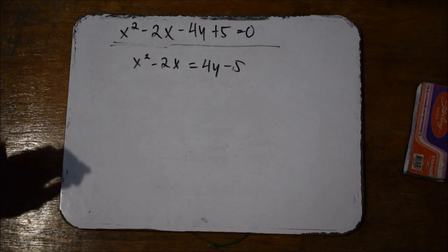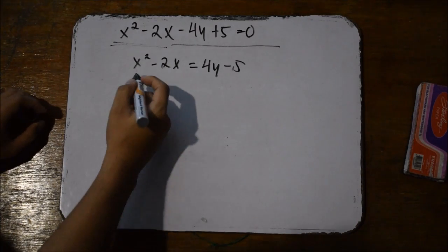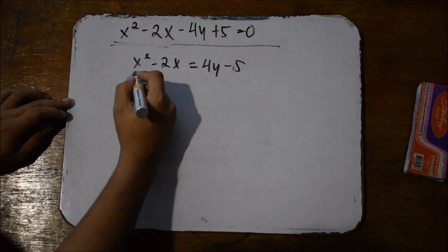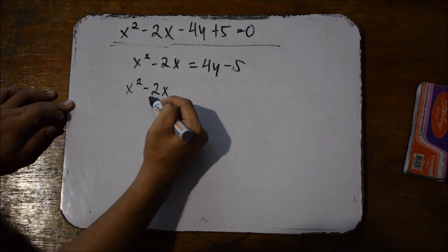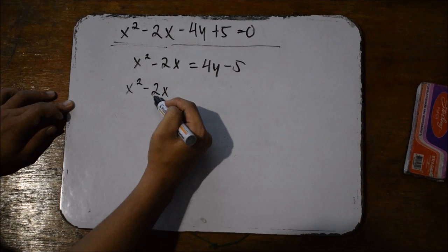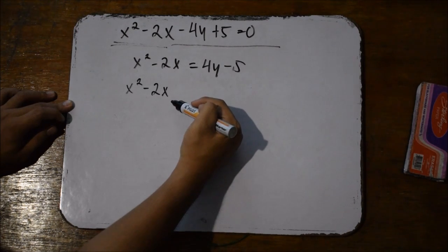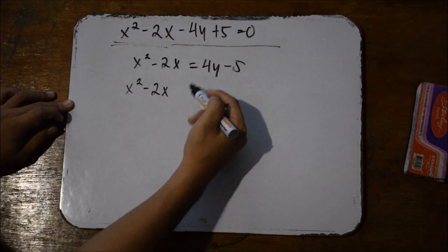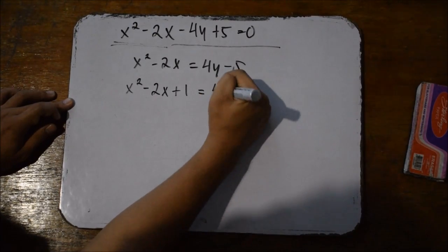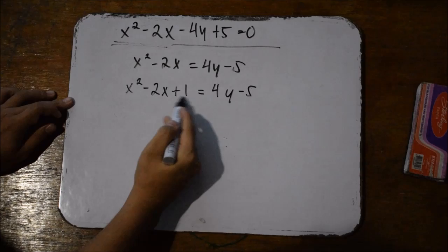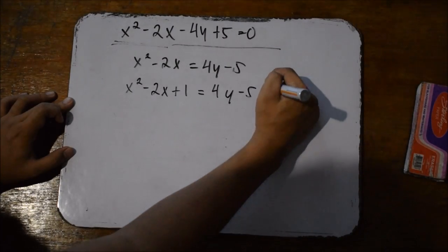After this, we're going to complete the square. Completing the square is done to simplify the expression. For example, with x squared minus 2x, we divide the second term by 2: negative 2 divided by 2 is negative 1. Then we square the quotient we got — negative 1 squared is 1. So we add 1 to the left side, and whatever integer was added to one side, we need to add it to the other side as well — so plus 1.